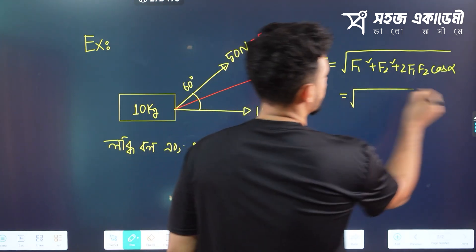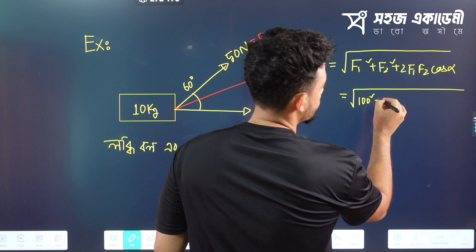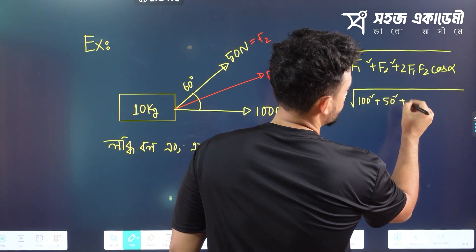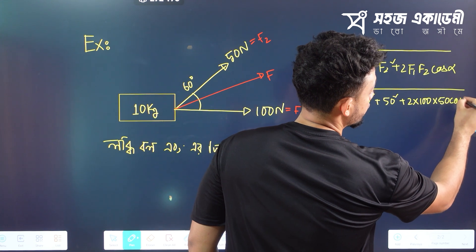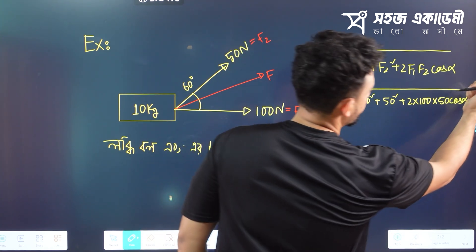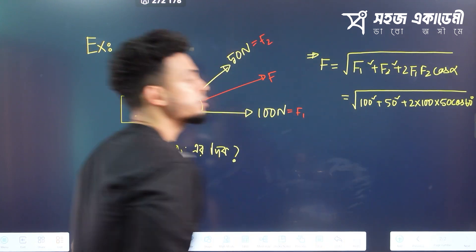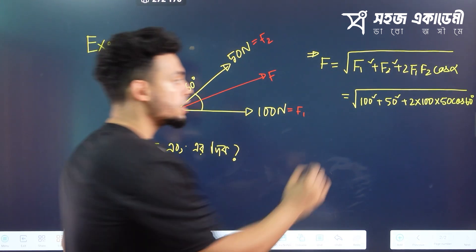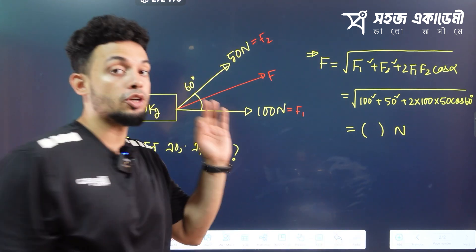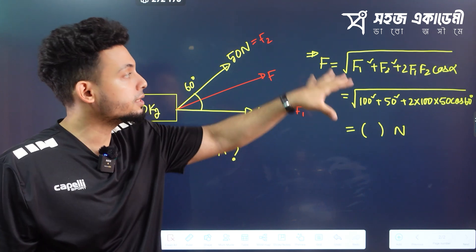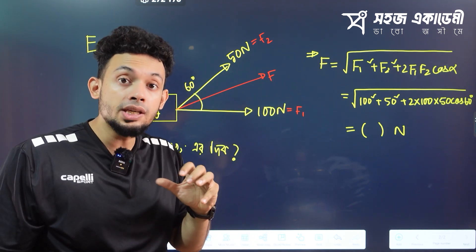So what do I say? 100 squared, f2 is 50 squared, 2 into 100 into 50 cosα. So the cosα — the value of alpha is like 60. You can do some kind of Newton. The important value is to call it f1 squared plus f, then you will replace f.